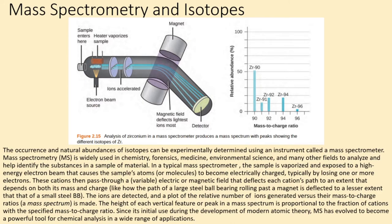The ions are detected, and a plot of the relative number of ions generated versus their mass-to-charge ratios, a mass spectrum, is made. The height of each vertical feature or peak in a mass spectrum is proportional to the fraction of cations with the specified mass-to-charge ratio. Since its initial use during the development of modern atomic theory, MS has evolved to become a powerful tool for chemical analysis in a wide range of applications.